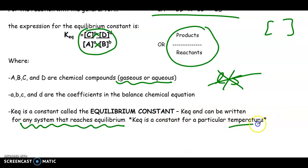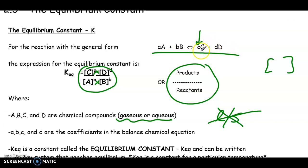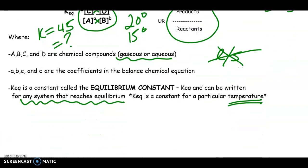KEQ is a constant called the equilibrium constant. KEQ can be written for any system that reaches equilibrium. One point to make note of is every equilibrium system has a different K value for each temperature. We know that temperature causes shifts in our reactions when we have equilibrium, so it will also change our constant.